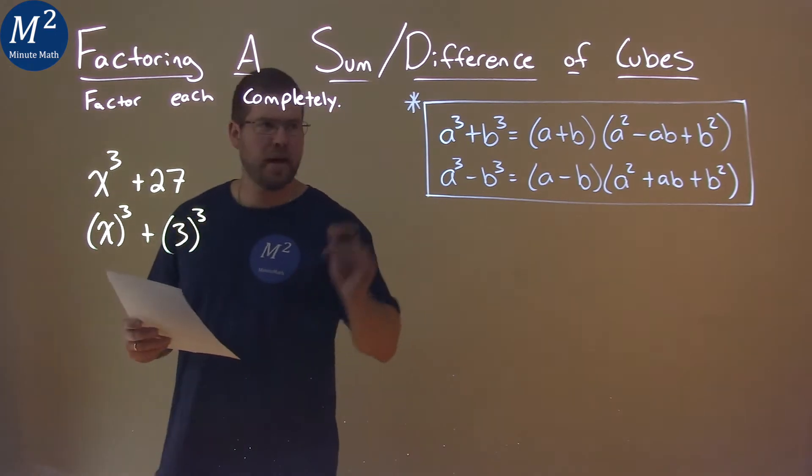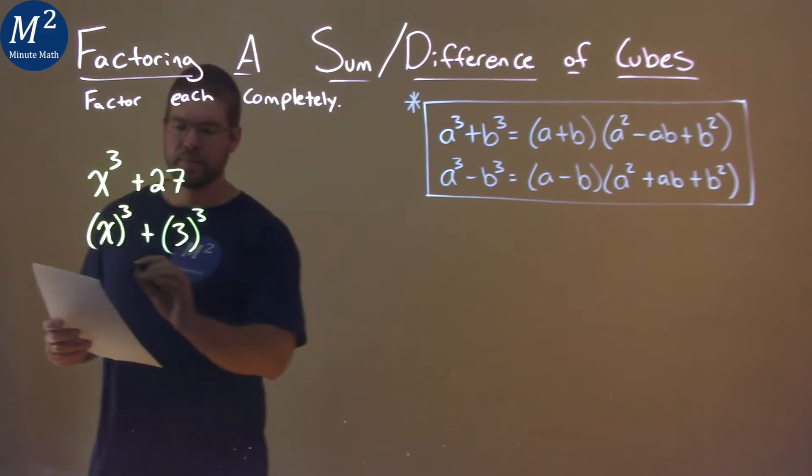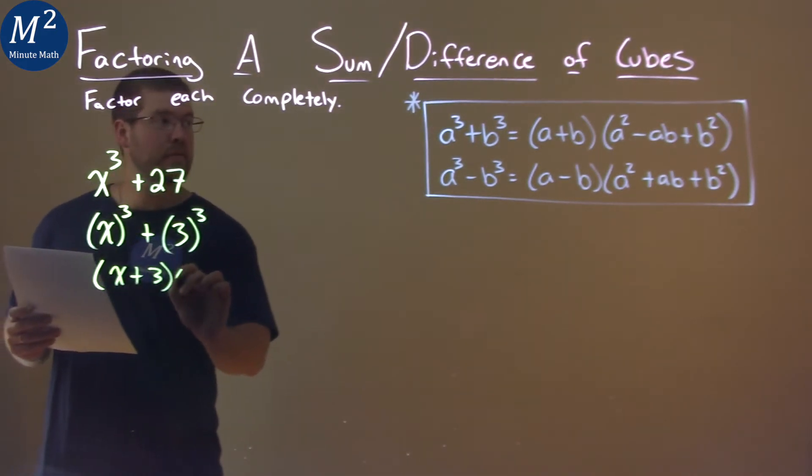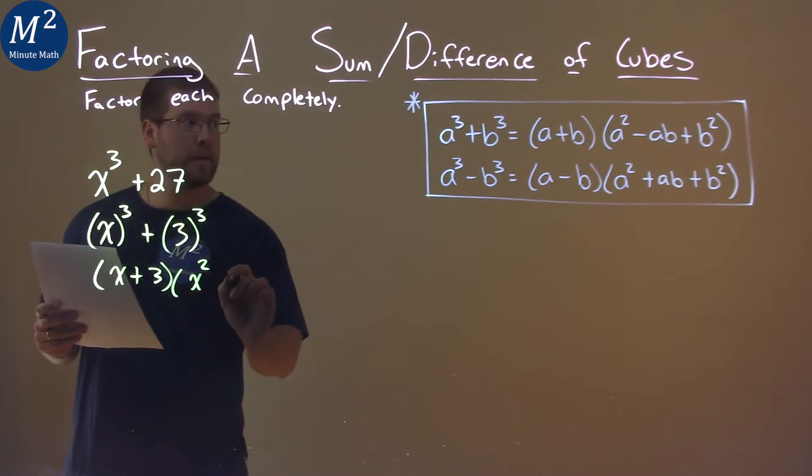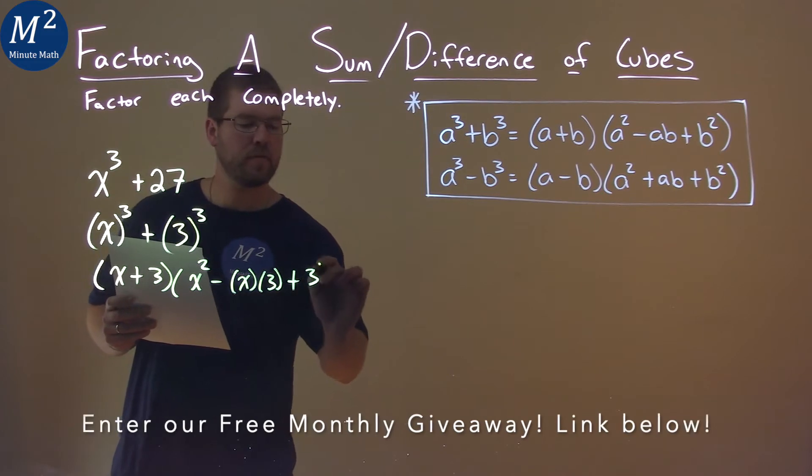So by using that, we have our a value to be x and our b value to be 3. Let's use the formula: (x + 3)(x² - x·3 + 3²).